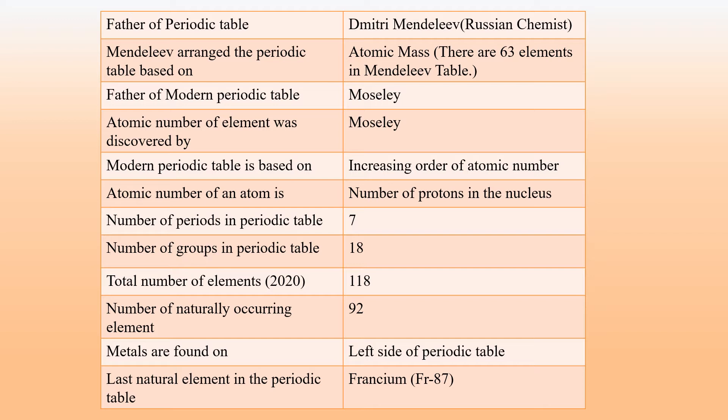The atomic number of an atom is the number of protons present in the nucleus. The number of periods or rows in a Periodic Table is 7. The number of groups or columns in the Periodic Table is 18.